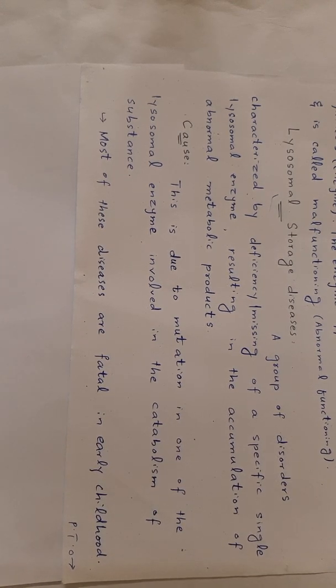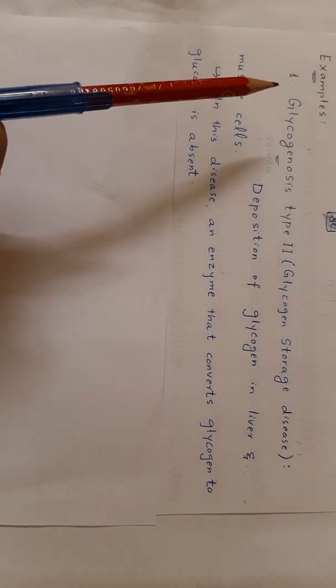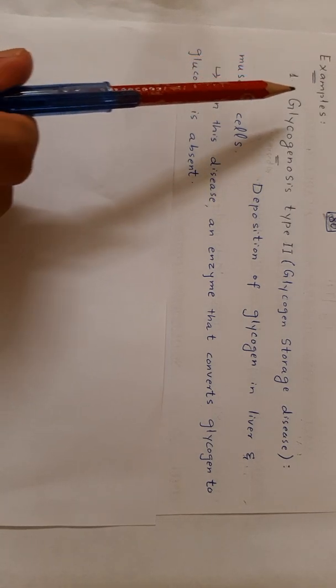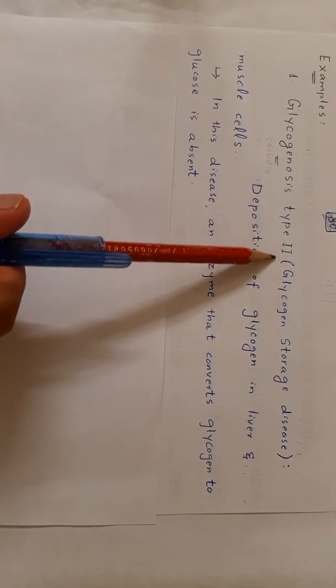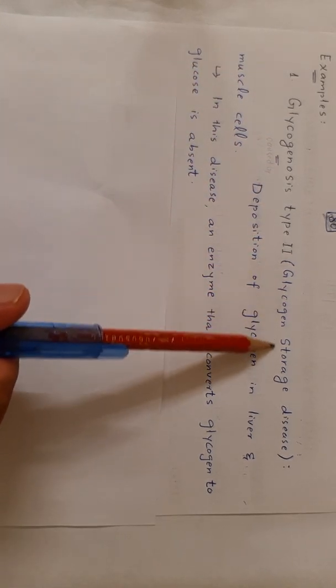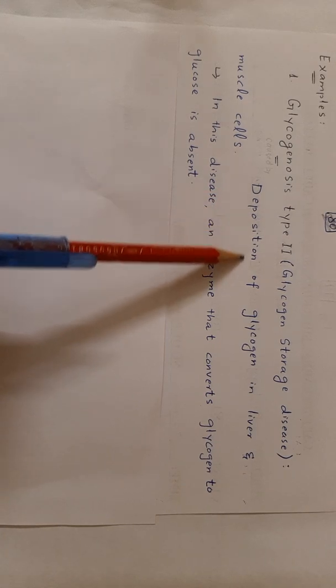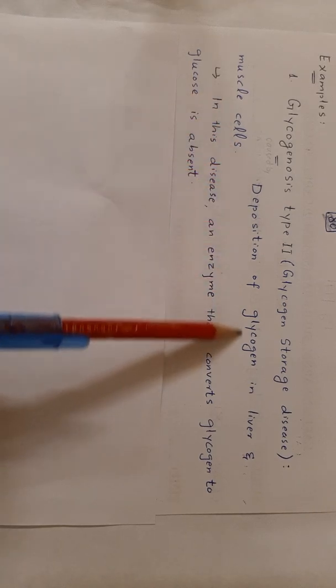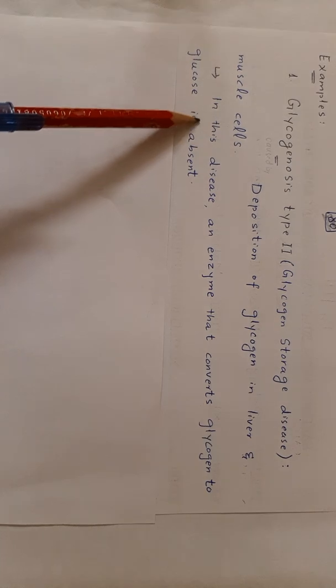Most of these diseases are fatal in early childhood. Now we will study two examples of lysosomal storage diseases. Number one: glycogenosis type 2, or glycogen storage disease. In this disease, there is a deposition of glycogen in liver and muscle cells.